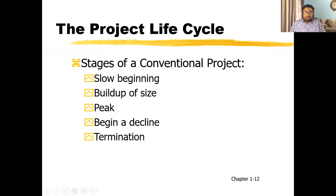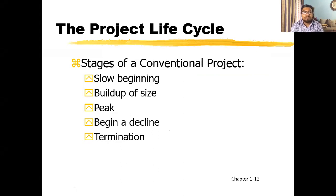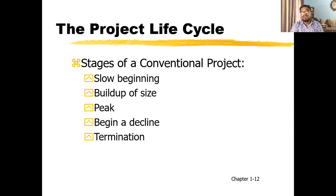I'm going to talk about the project life cycle. In a conventional project, there are five stages of the life cycle: the first is slow beginning, the second is build-up of size, the third is when you reach the peak, the fourth is begin at decline, and the last is the termination phase, when the project is not performing well and the life cycle is coming to an end.